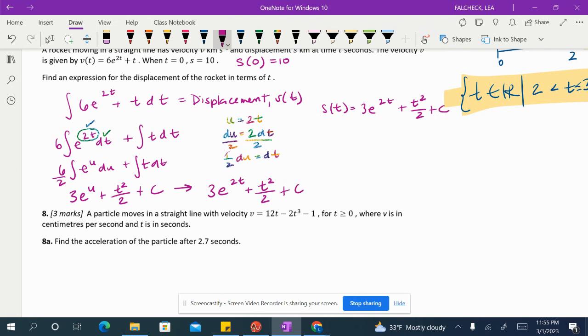Okay, so we have to find an expression for the displacement. So that means we can't have that pesky C out there. We've got to figure out what that C is going to be. That's where this piece of information comes in. So we're going to substitute that in here. When time is equal to 0, the whole thing should be equal to 10. The displacement should be equal to 10.